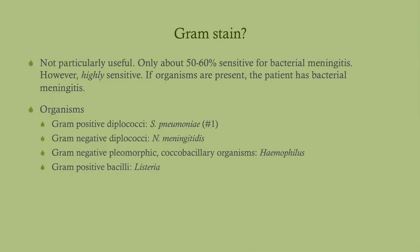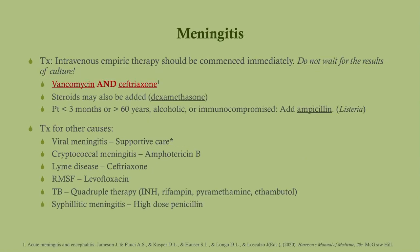Gram stains aren't particularly sensitive — you cannot rule out meningitis with a negative gram stain. However, a positive gram stain suggests infectious meningitis. On the USMLE, they describe how the organism looks rather than naming it: gram-positive diplococci is Strep pneumoniae, gram-negative diplococci is Neisseria. Presumptive treatment is vancomycin and ceftriaxone — you need to know that.